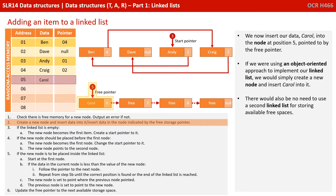We now insert our data, Carol, into the node at position 5, pointed to by the free pointer. If we were using an object-oriented approach to implement our linked list, we would simply create a new node and insert Carol into it. There would also be no need to use a second linked list for storing available free spaces.